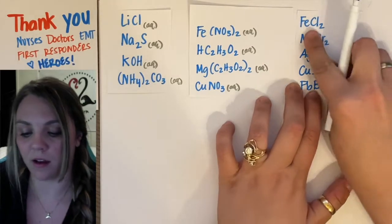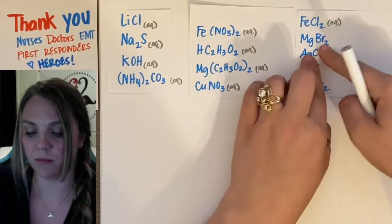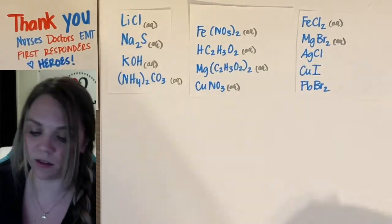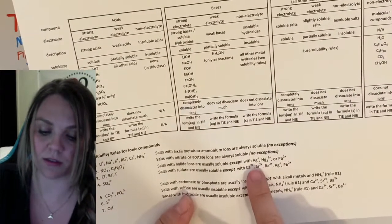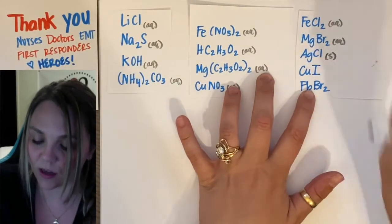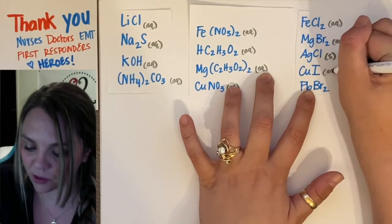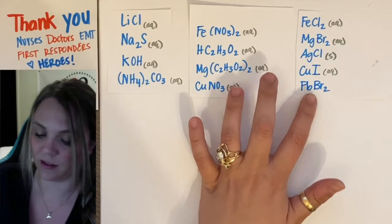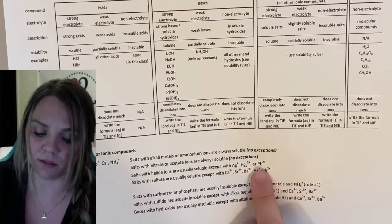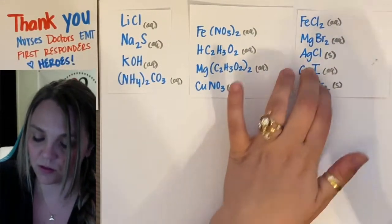We have iron 2 chloride. It's going to be aqueous. Magnesium bromide. Aqueous. Silver chloride. Dun-dun-dun. That's one of the exceptions. So, it's soluble unless it's bonded to one of those. So, this dude is a solid. Copper. Doesn't break the rules, so it's aqueous. Lead 2 bromide. Lead. That's our exception. So, dude is a solid.